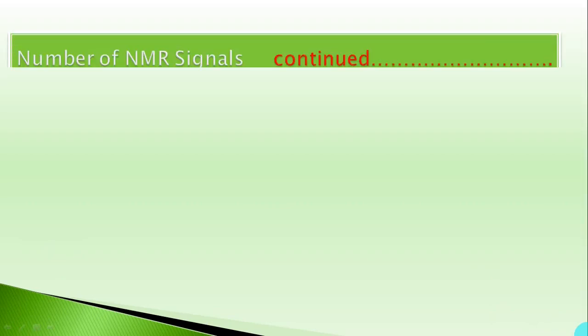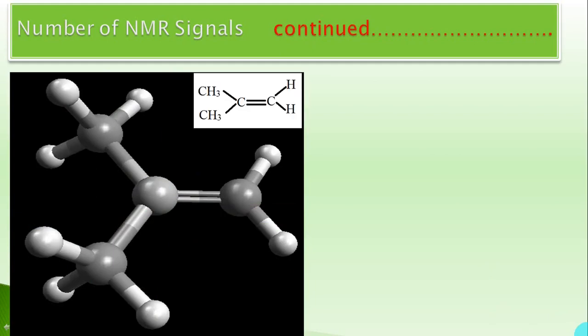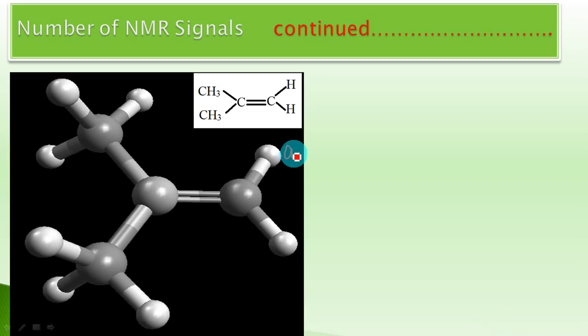So students, what we have learned so far is that any organic compound will give as many NMR signals as it has equivalent sets of protons. Let us understand this concept of equivalent sets of protons with some more examples. Here is an alkene molecule — it is 2-methylpropene. We want to find out how many equivalent sets of protons it contains, because the number of equivalent sets equals the number of NMR signals.